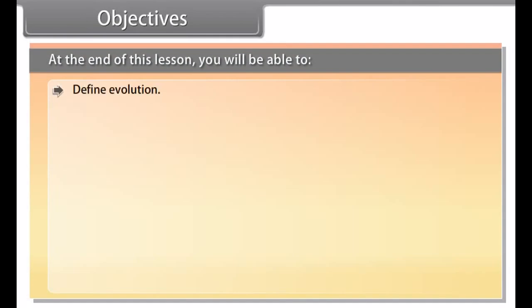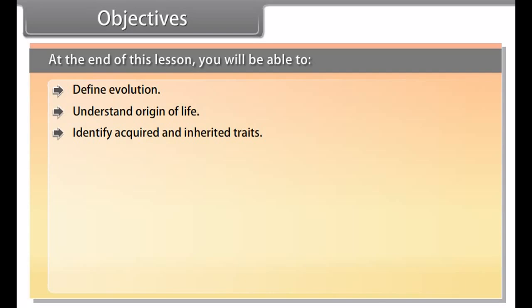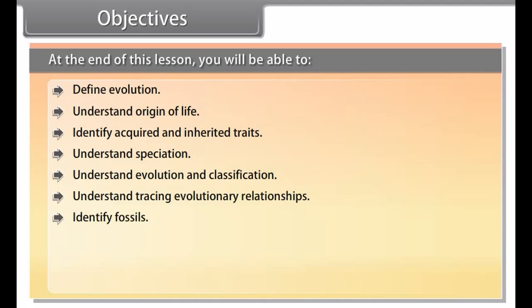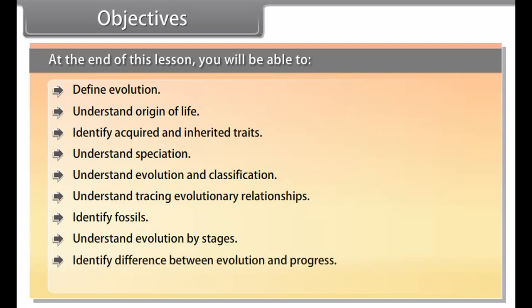At the end of this lesson, you'll be able to: define evolution, understand the origin of life, identify acquired and inherited traits, understand speciation, understand evolution and classification, understand tracing evolutionary relationships, identify fossils, understand evolution by stages, identify the difference between evolution and progress, and understand the process of human evolution.